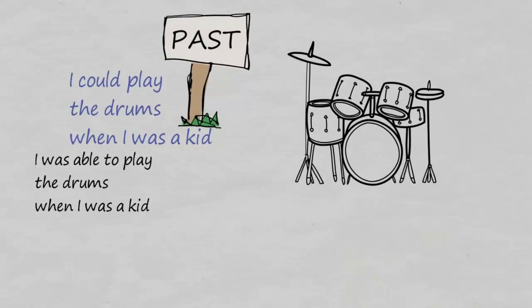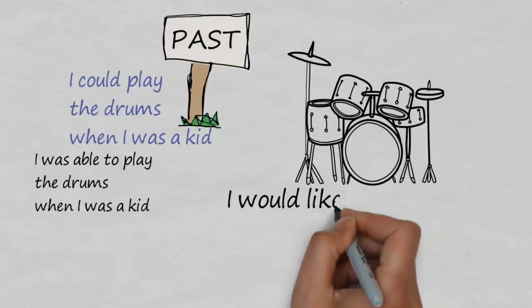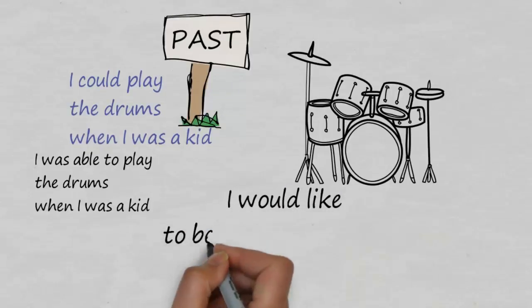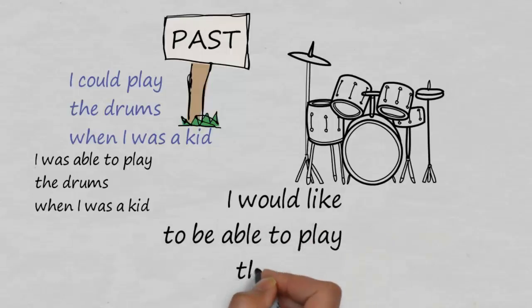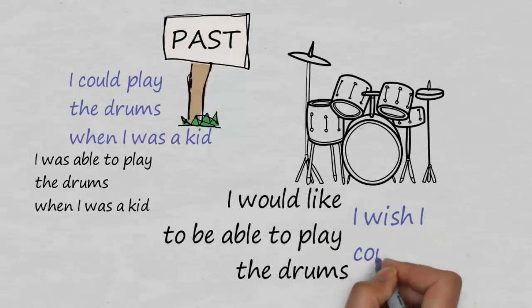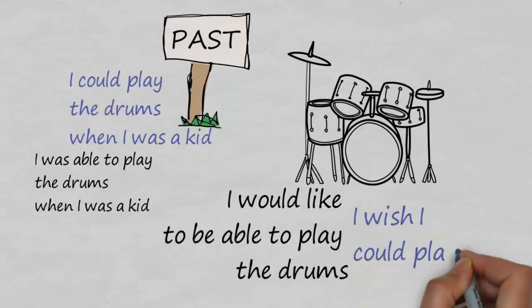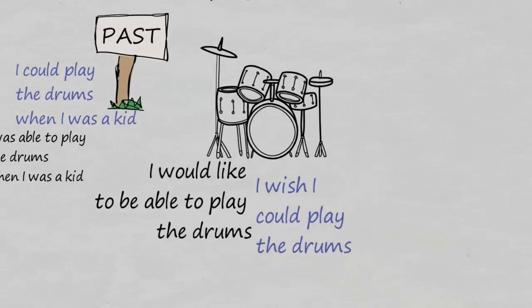When we talk about something we cannot do now — which we're not able to do, but we would like to be able to do — we can again use both forms. You could say 'I would like to be able to play the drums,' or 'I wish I could play the drums.' Alternatively, you could say 'I wish I was able to play the drums.'